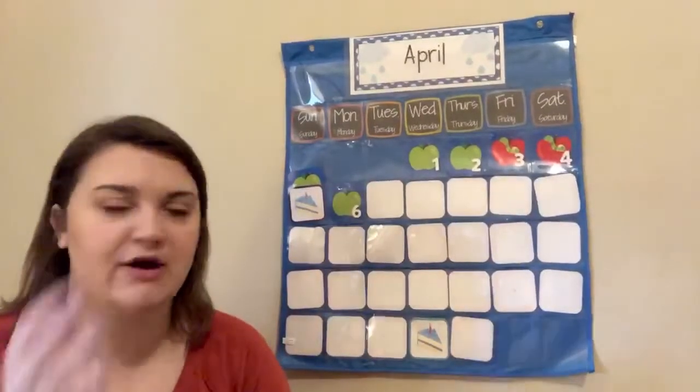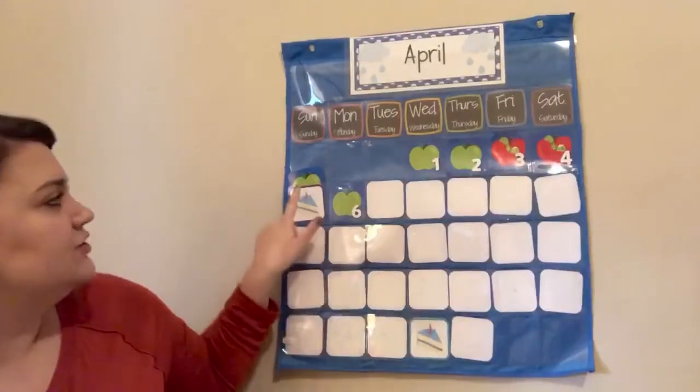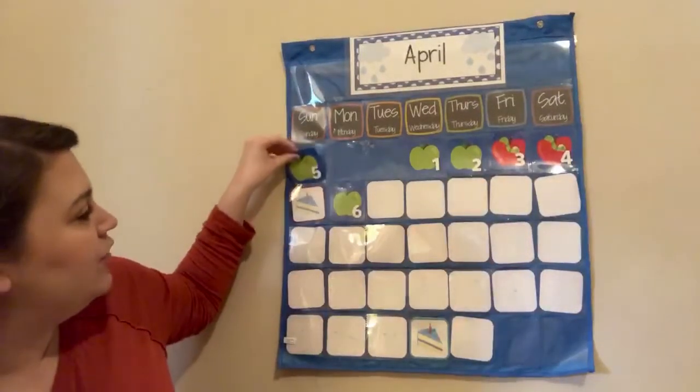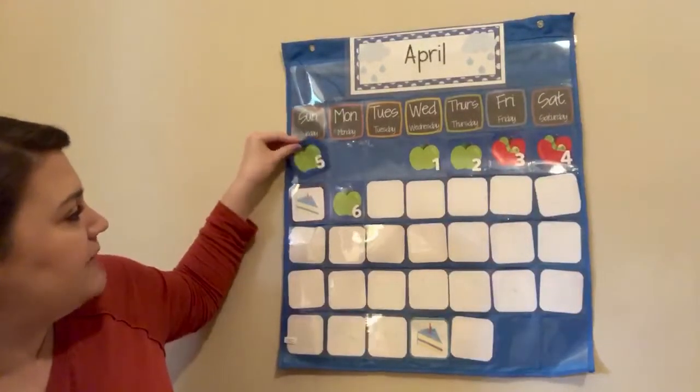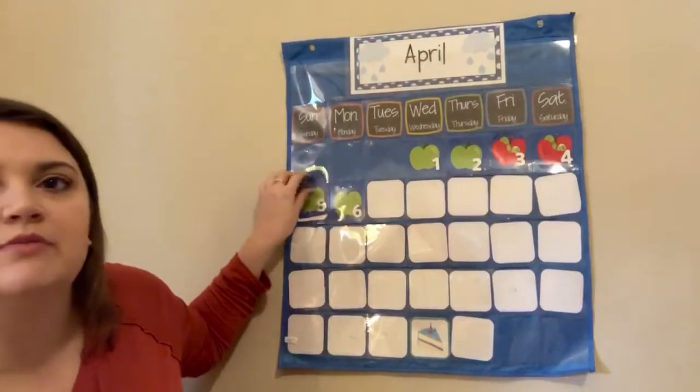After we figure all that out, we talk about anything special on our calendar. This month my class had two birthdays in April — Bella and Roberto. Those are on our calendar and we would celebrate those, and then we would move on to our message, greeting, sharing, and activity. Have a good day. Bye!